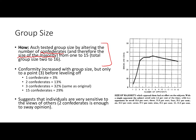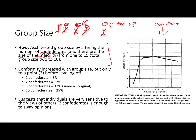He varied the number of confederates from just one confederate all the way up to fifteen, to see how the size of the majority would affect conformity in the real participant. The findings show a curvilinear relationship: as group size increases up to about three confederates, conformity rates also increase, but then it levels off.